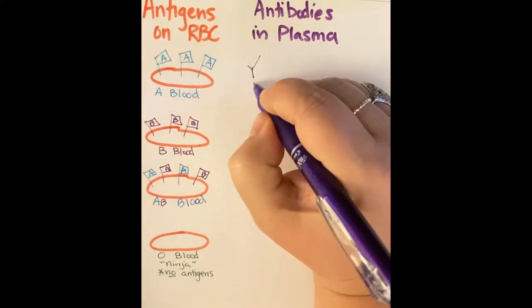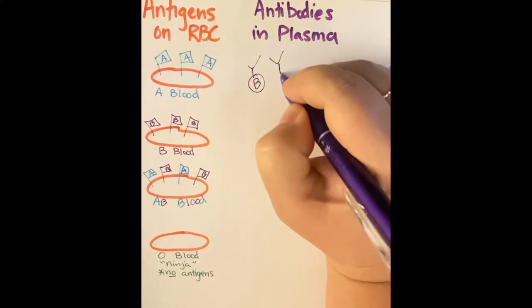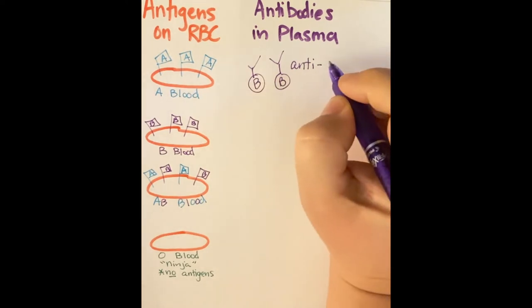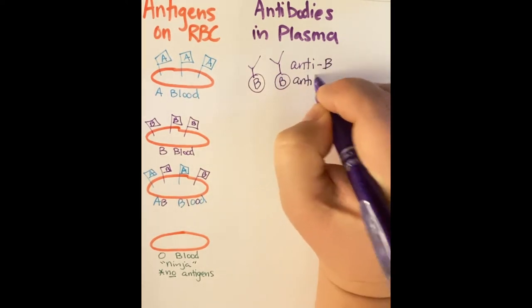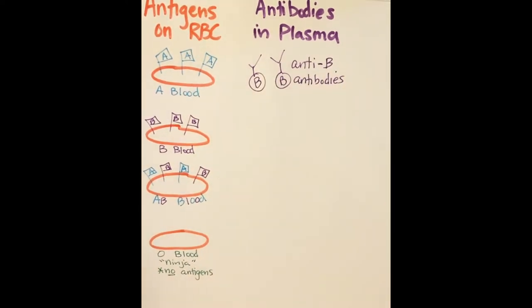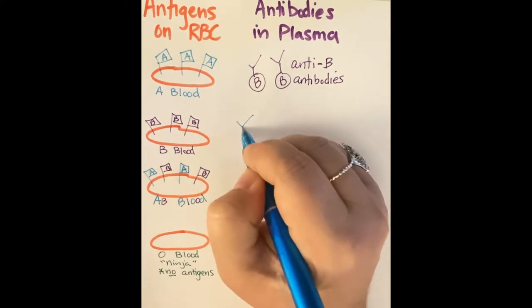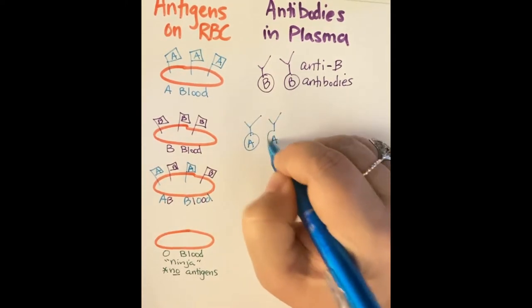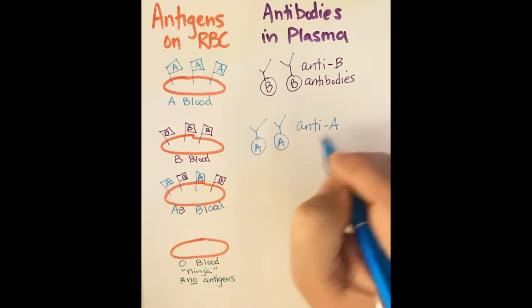Now let's review the antibodies that are floating around in your plasma. If you're blood type A, in your blood you have floating around anti-B antibodies. For blood type B, you have anti-A antibodies floating in your plasma.